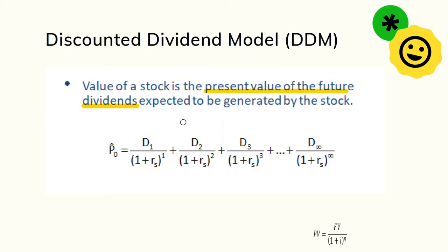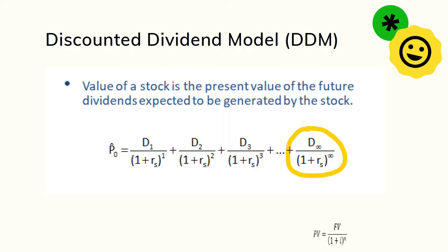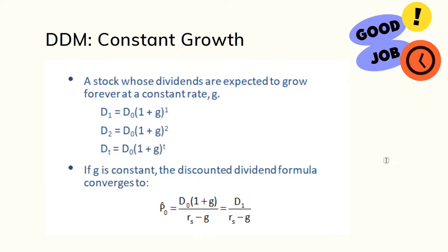This is the discounted dividend model, showing how to find the present value of future dividends discounted at the required rate of returns on common stock, r_s. In this mathematical model, the last term specifies infinite time periods. It is not practical to calculate cash flows to infinity, so we must add the additional assumption of a constant growth rate equal to g.